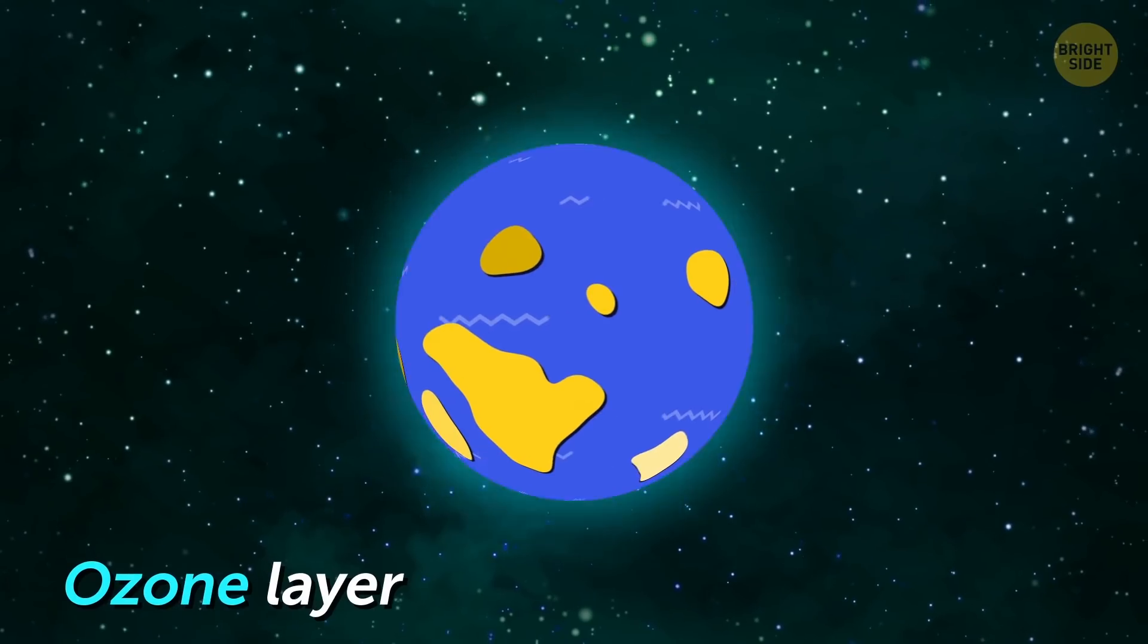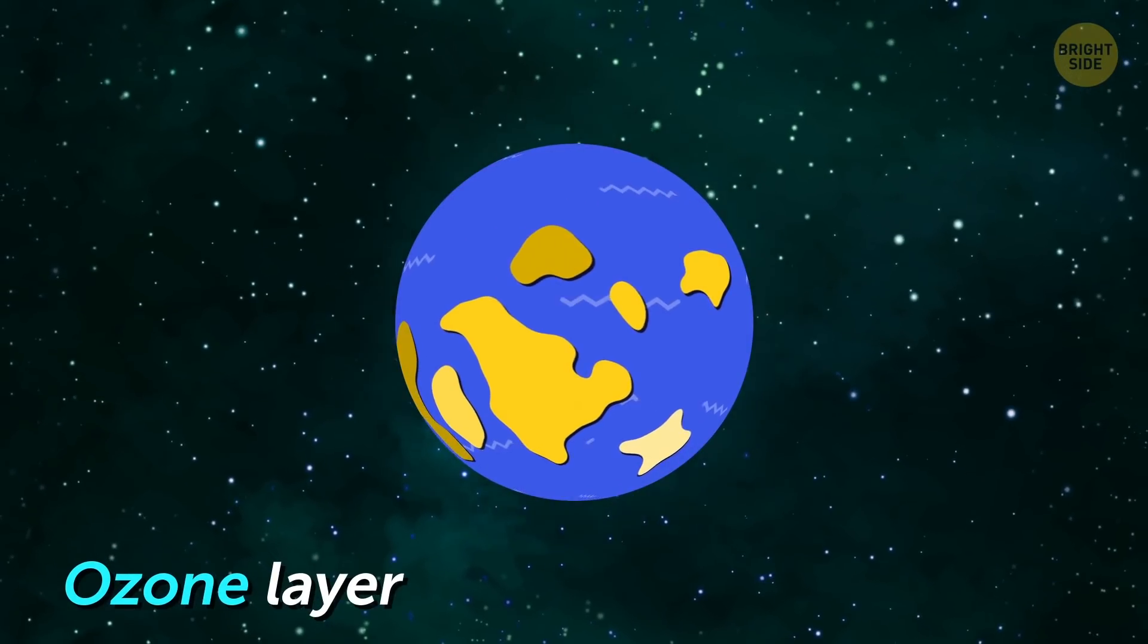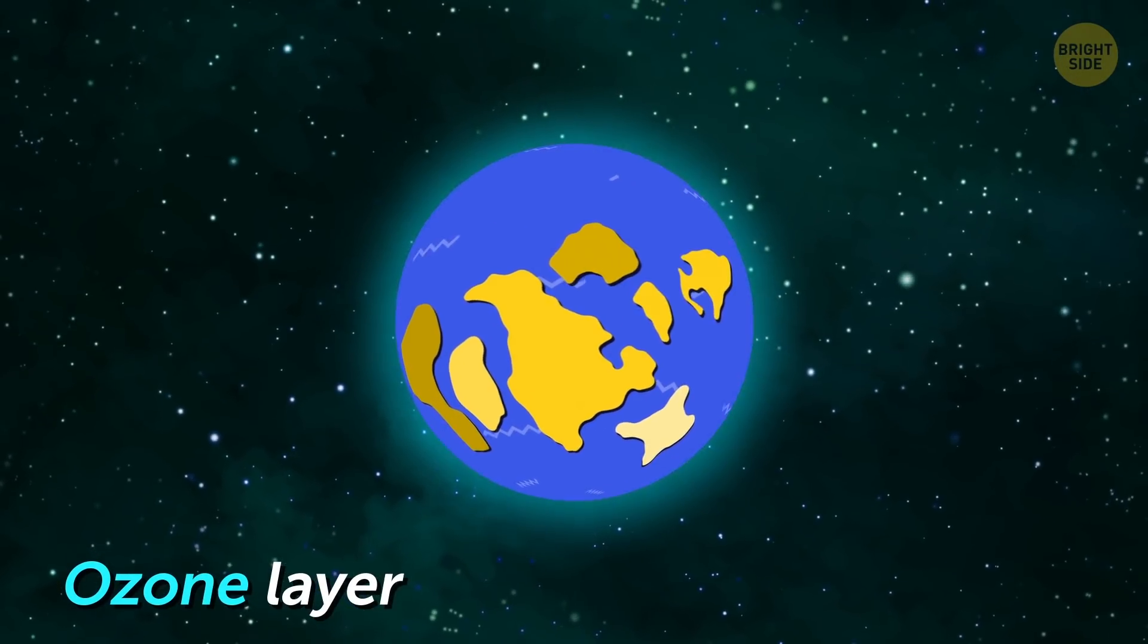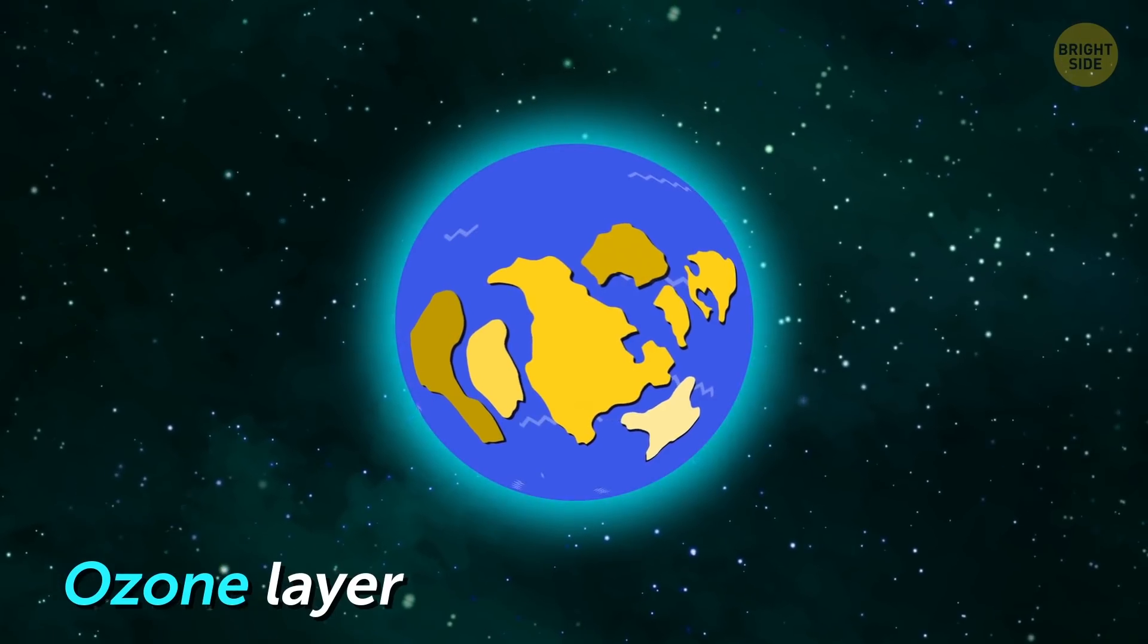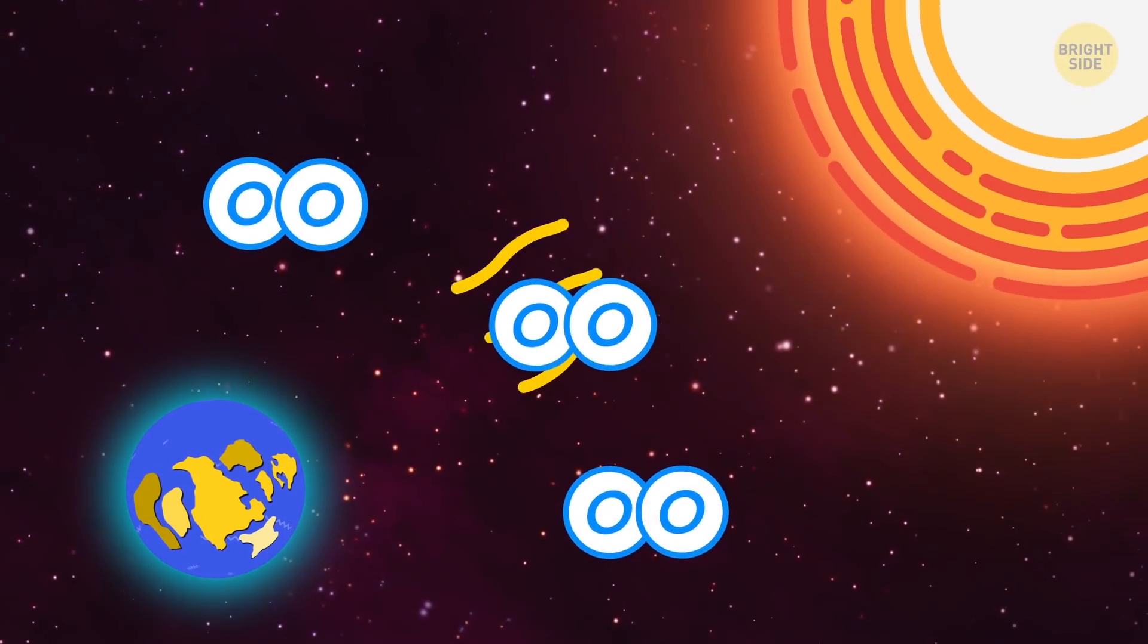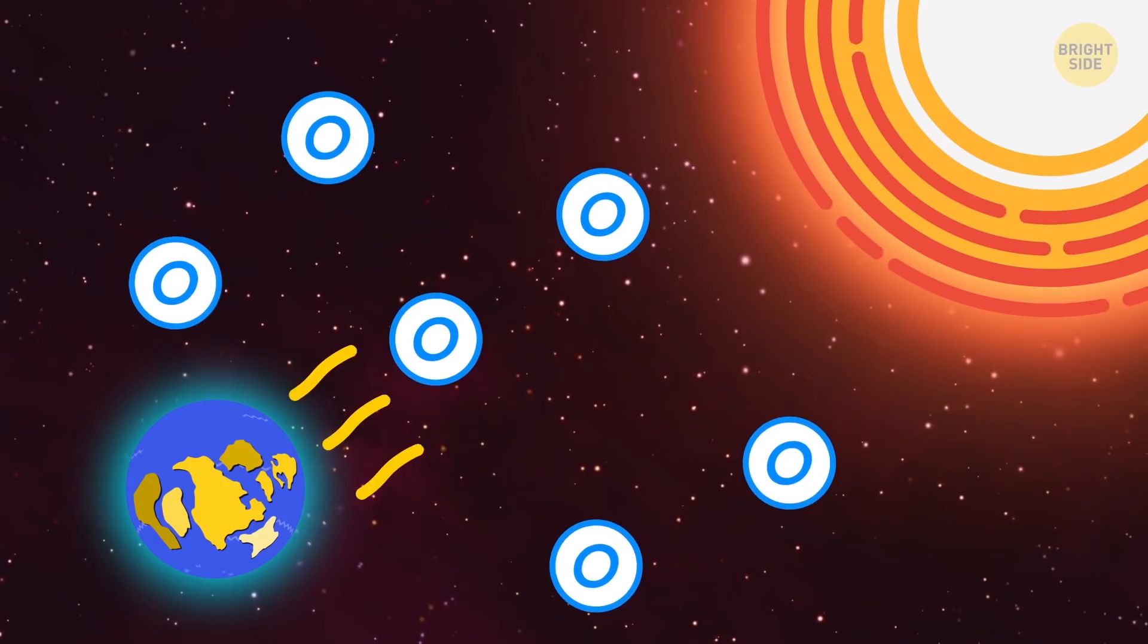That's when the ozone layer comes into play. The ozone shield started forming a little after the Rodinian continent appeared. Sunlight hit the oxygen molecules and broke them into smaller, individual atoms.